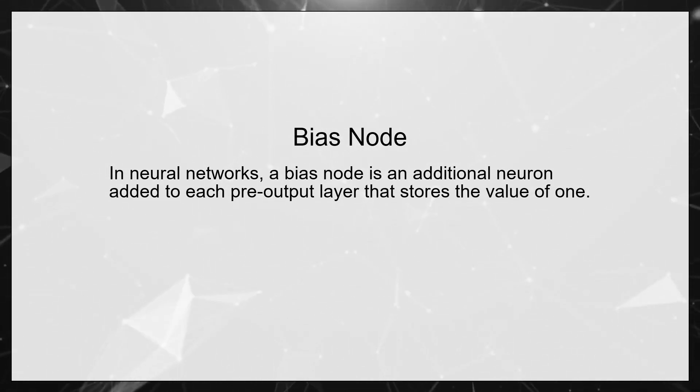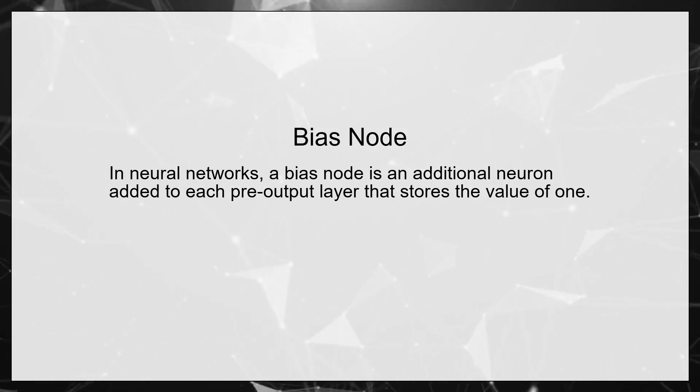Gradient Descent. This is an optimization algorithm used to minimize some function by iteratively moving in the direction of steepest descent as defined by the negative of the gradient.